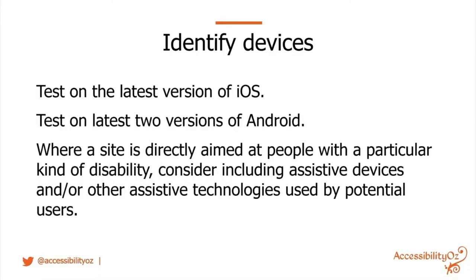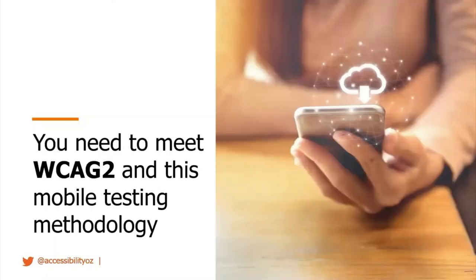In terms of versions, you should test on the latest version of iOS and the latest two versions of Android. Where a site is aimed at people with a particular disability, consider including assistive technologies and devices used by potential users — for example, if it's aimed at switch users, test with keyboard and switch options. You need to meet both WCAG 2 and this mobile testing methodology; you can't just meet the mobile methodology alone.